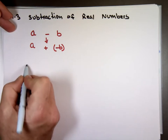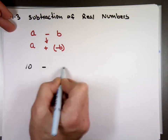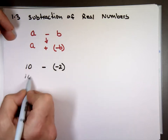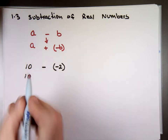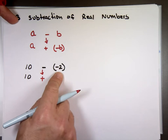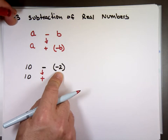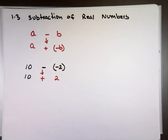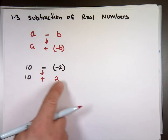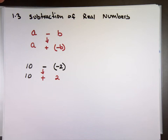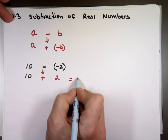An example: if I want to do 10 minus negative 2, the 10 is going to stay the same — the first number stays the same — change the subtraction to addition and take the opposite of negative 2. What is the opposite of negative 2? Positive 2. Now apply the rule of addition. How do you add 10 plus 2? Both numbers have the same sign — add them and keep the sign. The answer is 12.